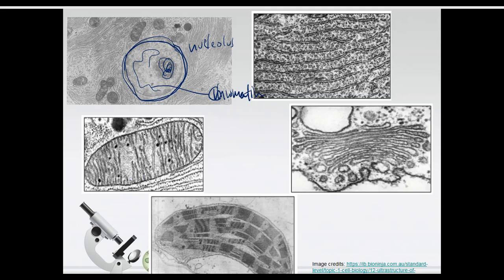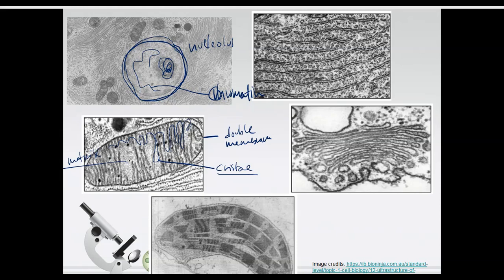Here we have a mitochondria. Mitochondria are also double membrane bound — we learned about that from the endosymbiotic theory. The inner membrane of the mitochondria curls up in little waves and folds called cristae. The inside of the mitochondria is called the matrix. So: matrix in the middle, cristae are the folds of the inner membrane, double membrane mitochondria.